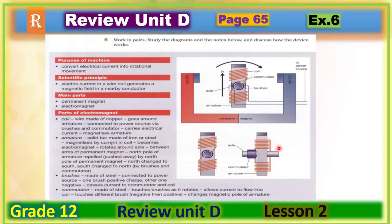This is a description of how a device works. You have to write about the four sections: purpose, scientific principle, main parts, and description of what each part does. This is how we can describe how a device works.